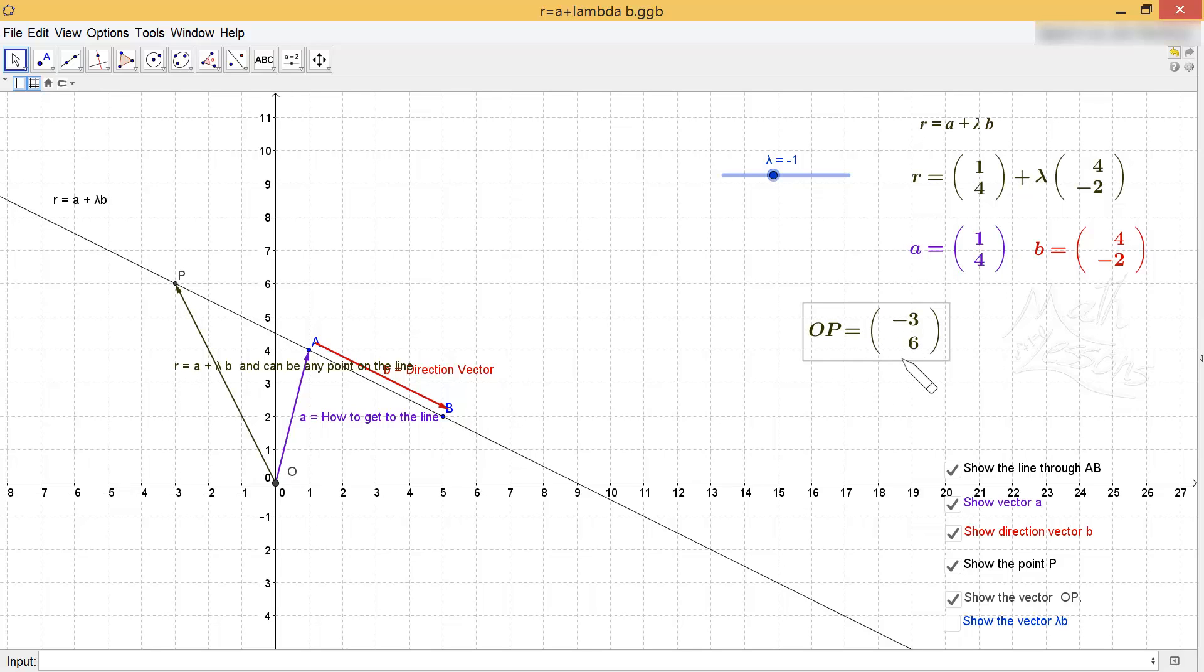So we can see how the position vector of OP is built up of vectors A and B. Let's just move our lambda down to 2. So we have two lots of the direction vector to get us from A to our point P. I'm just going to move that there. There we go. So there's P. So what we've got: we've got the vector (1, 4) of A, then we add on to it two lots of the vector B.